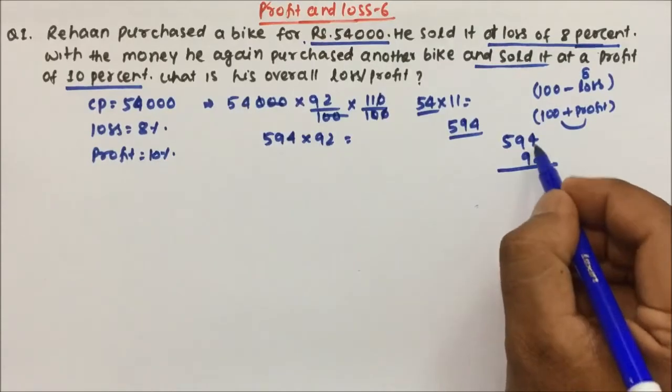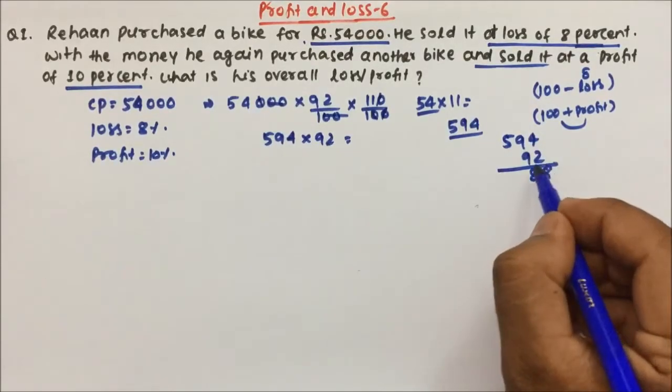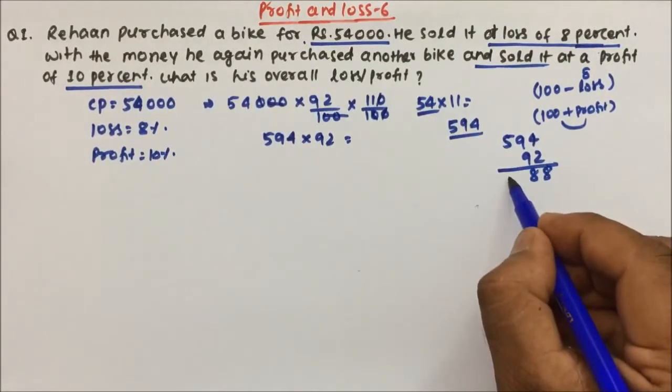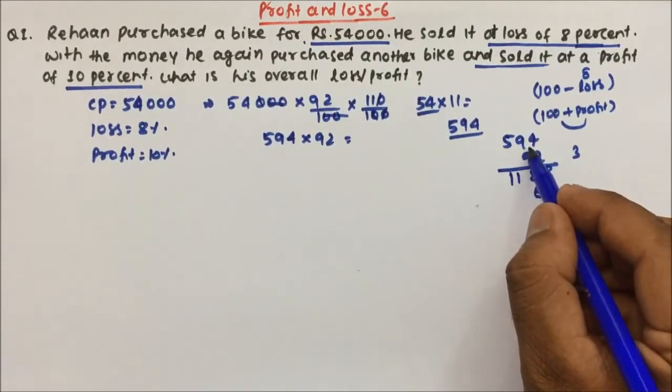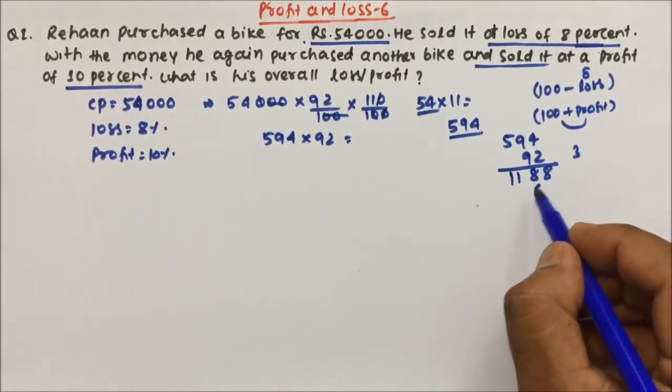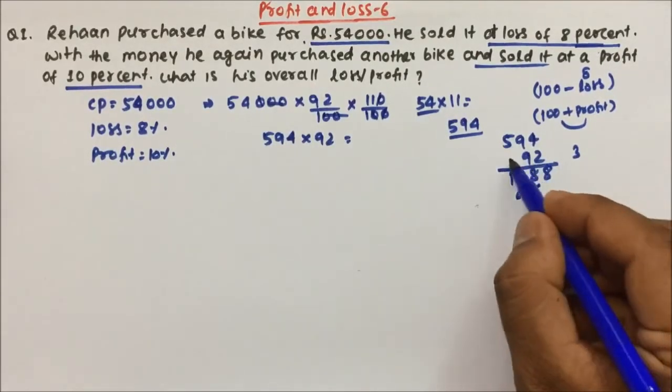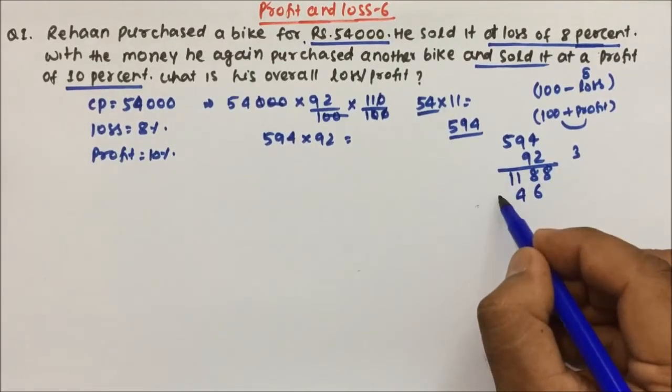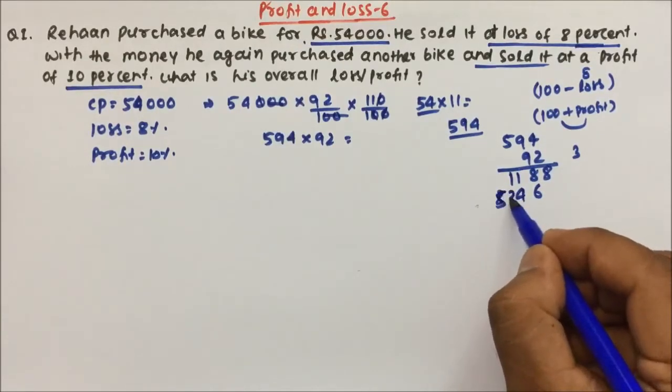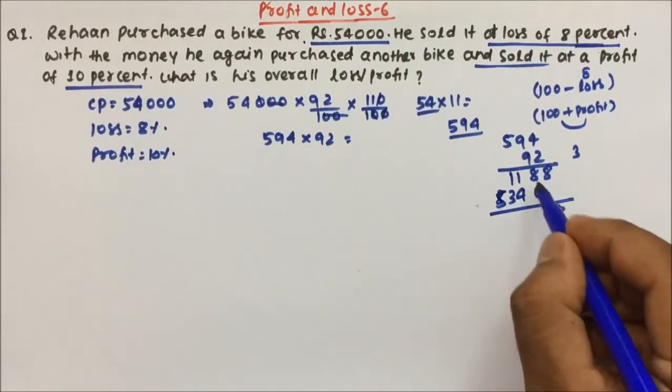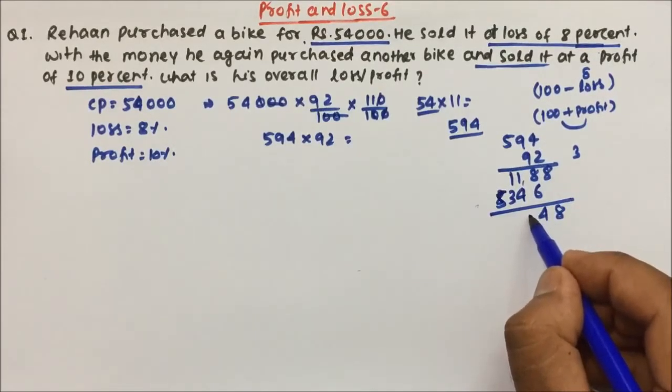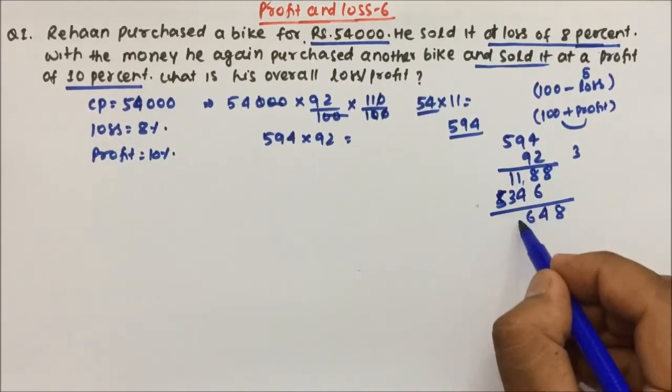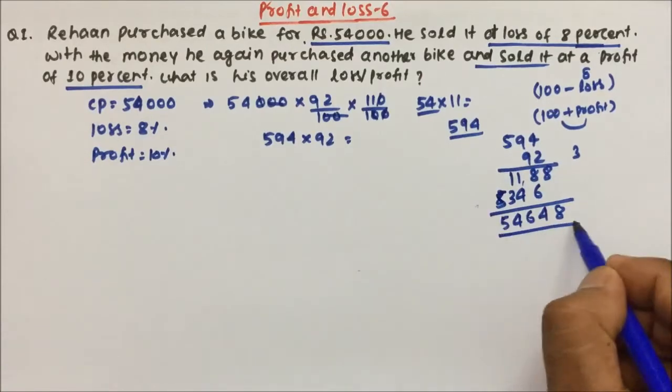Into 92. So if we multiply 594 into 92, 2 into 4 is 8, 2 into 9 is 18, 1 will be in hand, 2 into 5 is 10, 10 plus 1 is 11, 9 into 4 is 36, 3 will be in hand, 9 into 9 is 81, 81 plus 3 is 84, so 8 will be in hand, 9 into 5 is 45 plus 8 is 53.